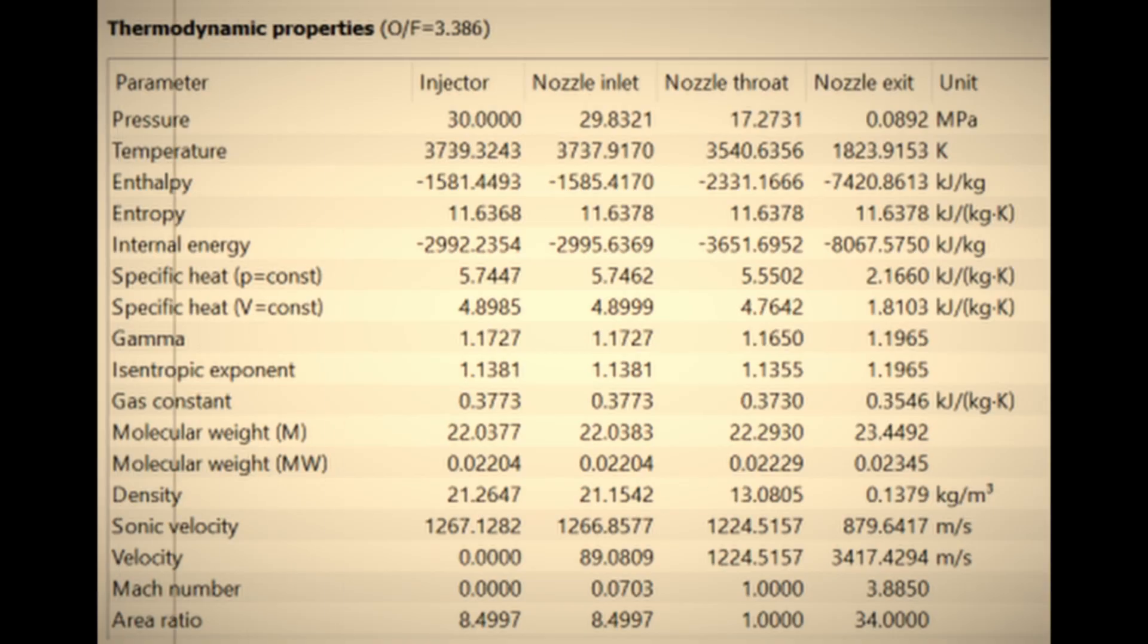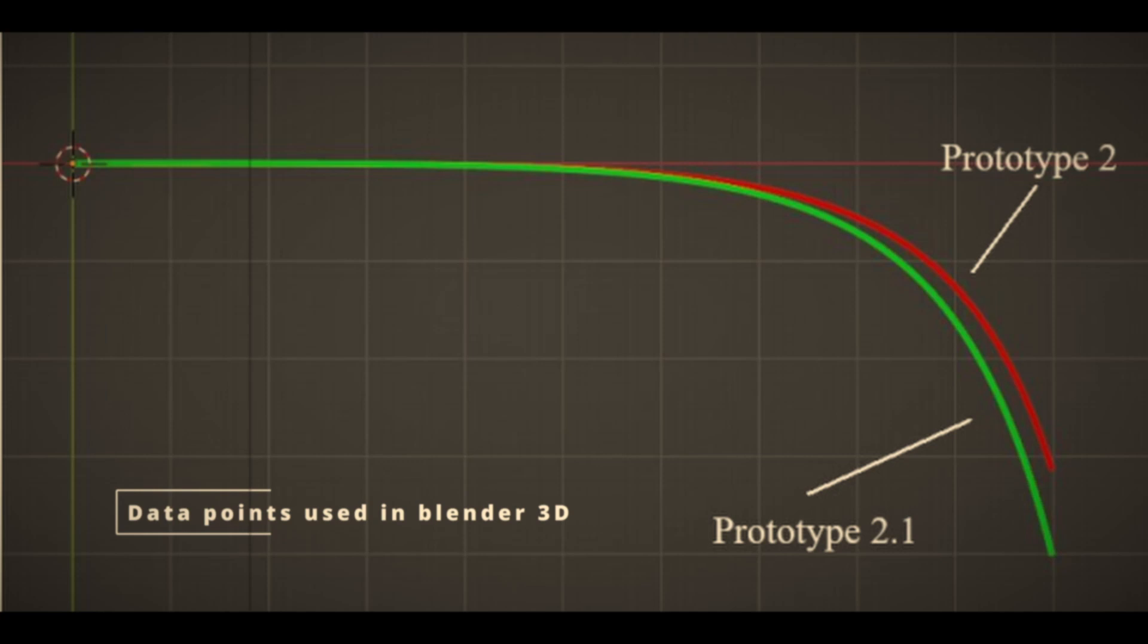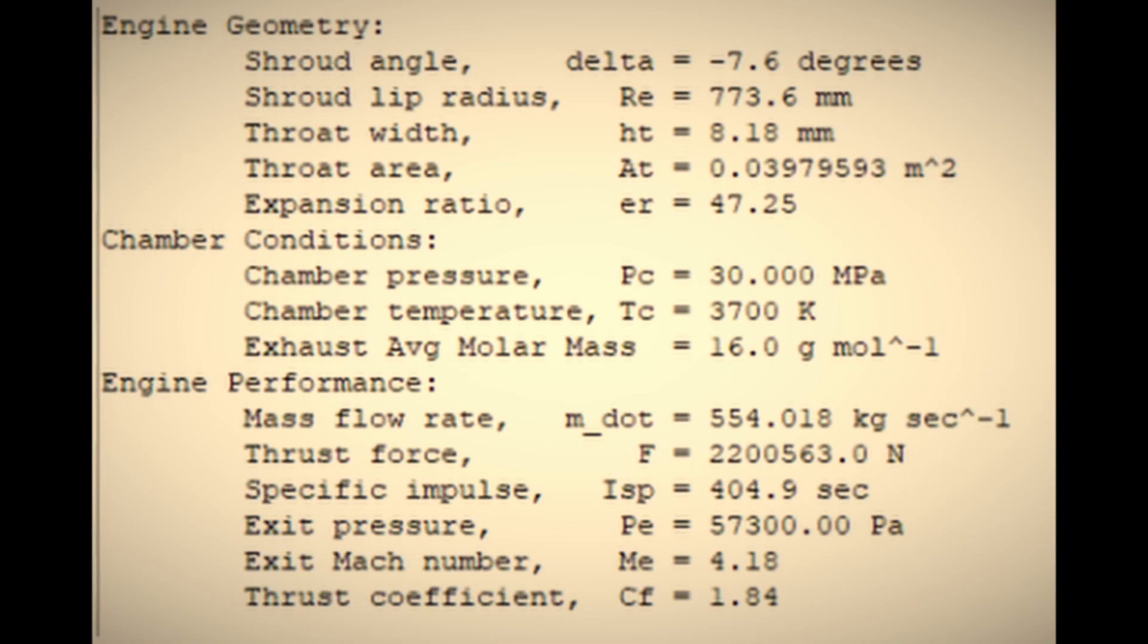After calculating valuable data, such as the combustion chamber temperature and pressure, and rocket propulsion analysis, I used a Python script to generate the nozzle contour and obtain data, such as its expected efficiency.